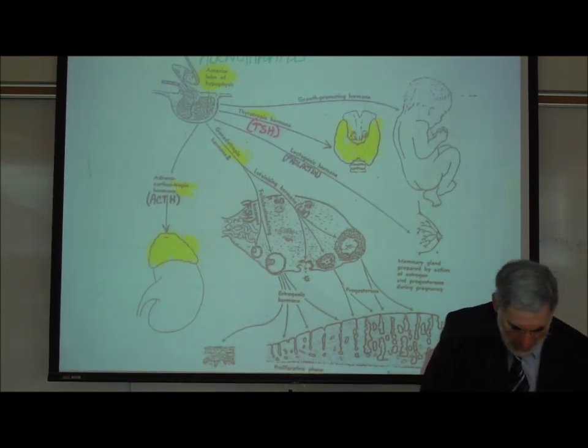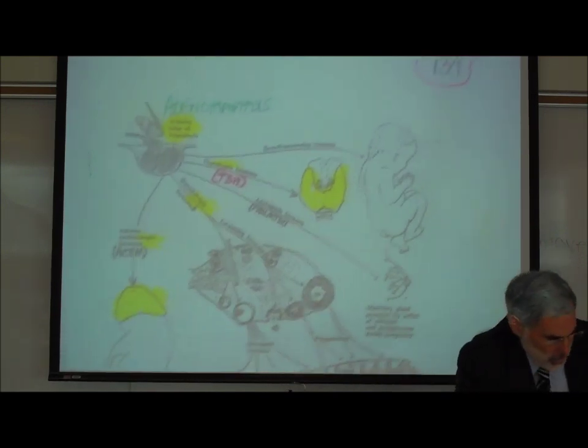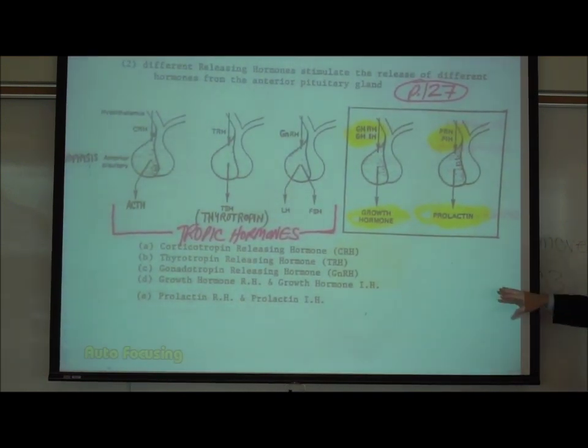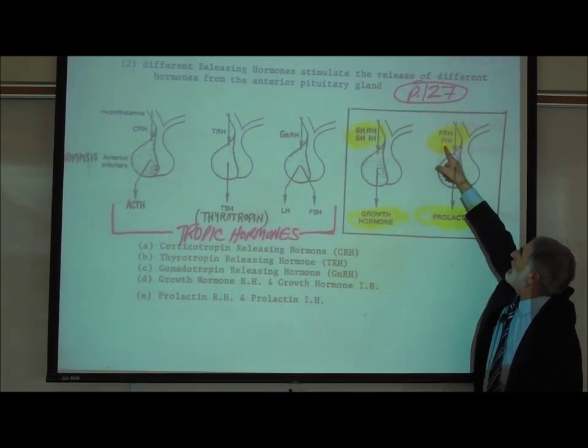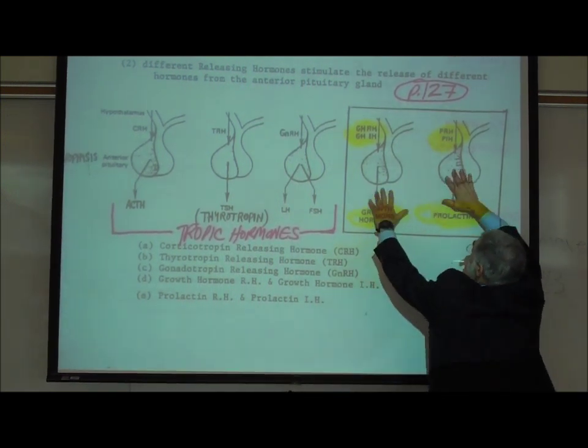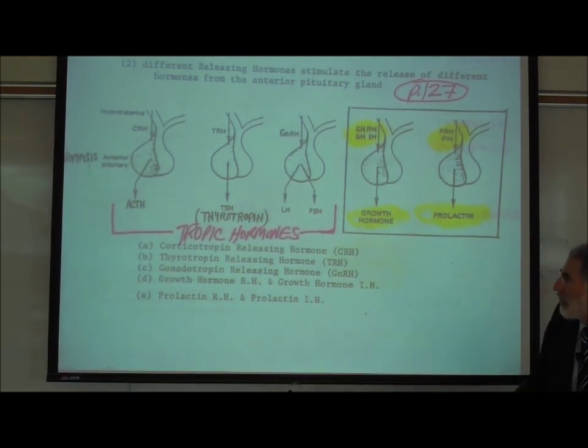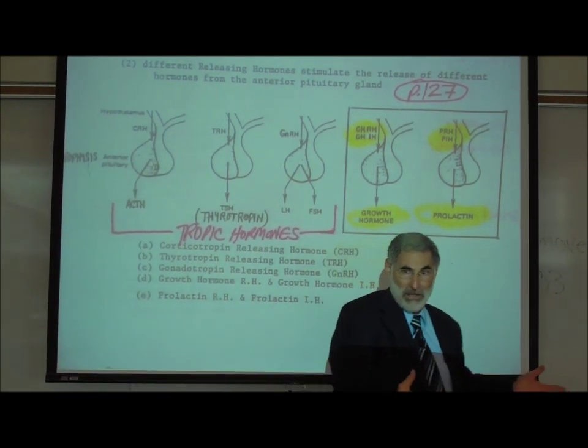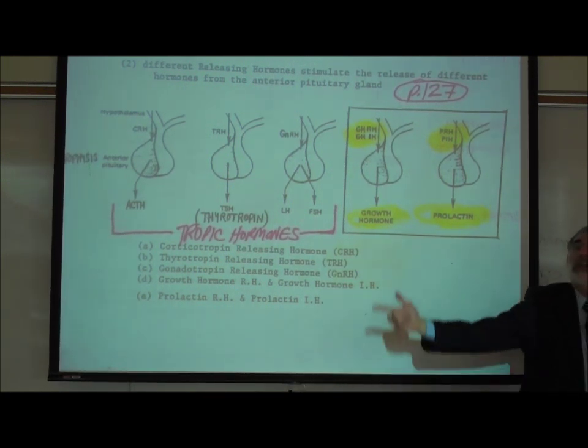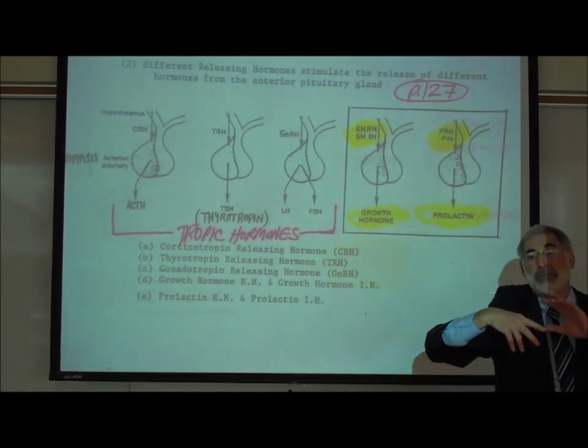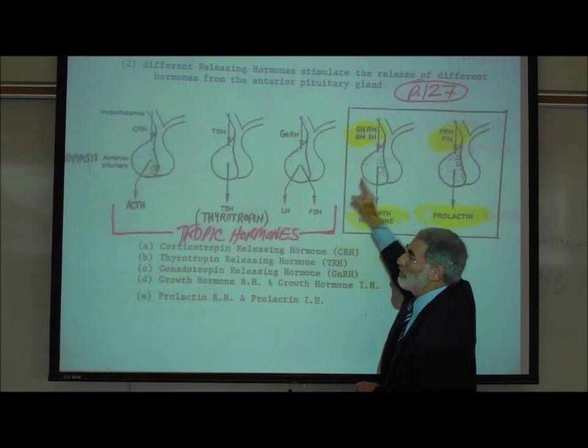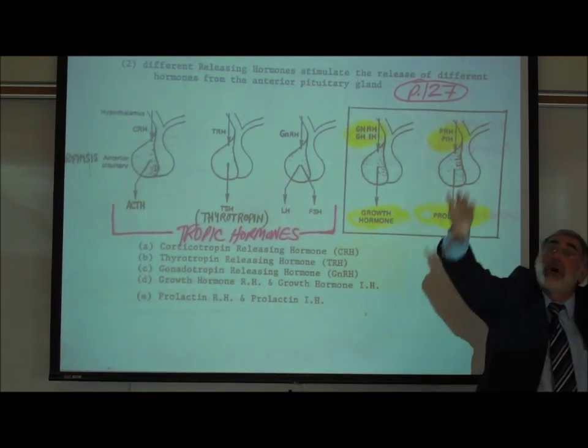So this cannot be regulated through a negative feedback. So if we go back to page 127, you'll notice that on the lower right, for growth hormone and prolactin, there is not only a releasing hormone, there is an inhibitory hormone. Because growth hormone and prolactin are not tropic hormones, these affect other endocrine glands that have a negative feedback loop. The growth hormone and prolactin do not affect endocrine glands, there's no negative feedback loop. So you actually have to have a neurotransmitter, one that causes the release of the hormone, and the other that inhibits the release.